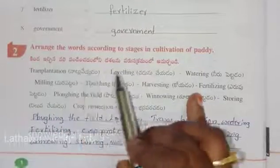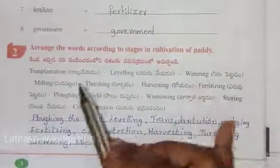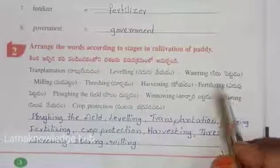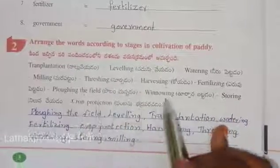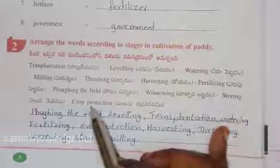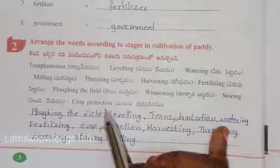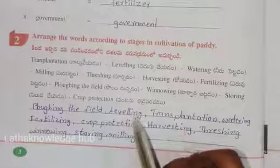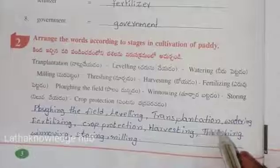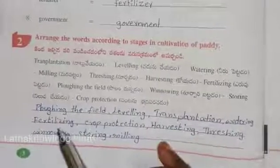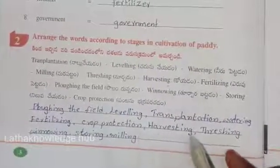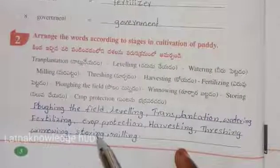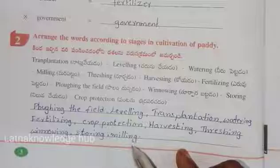Arrange the words according to stages in cultivation of paddy. The correct order is: ploughing the field, leveling, transplantation, watering, fertilizing, crop protection, harvesting, threshing, winnowing, storing, and finally milling the paddy.